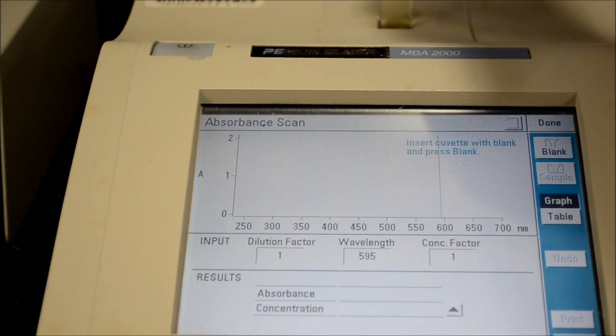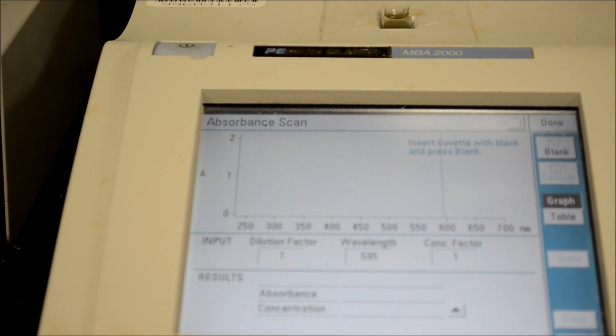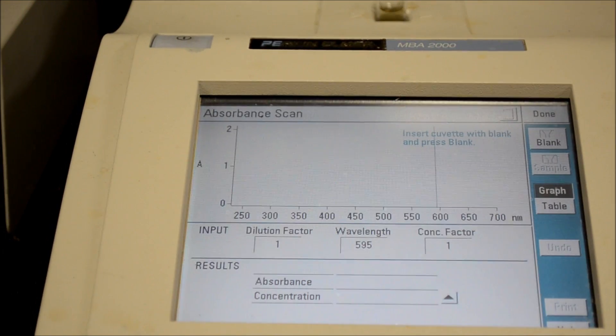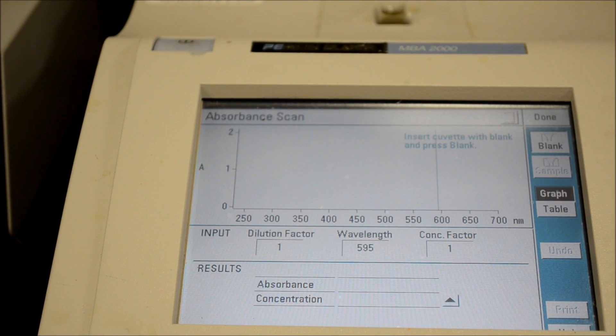First, you want to measure the blank to set a baseline. For this, you need a spectrophotometer set at 595 nanometers. Insert the blank and press the blank button and wait for the spectrometer to read the blank.